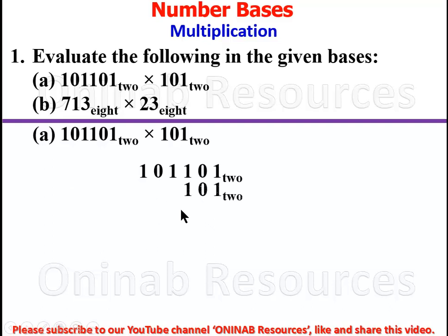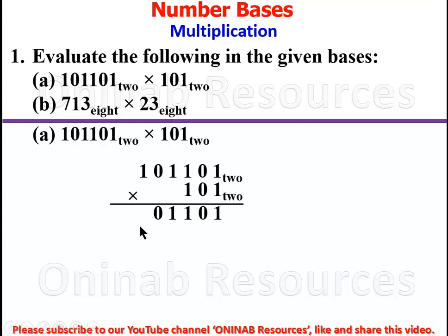We are going for expanded multiplication. Starting with the first digit of the multiplier: 1 times 1 is 1, 1 times 0 is 0, 1 times 1 is 1, 1 times 1 is 1, 1 times 0 is 0, and 1 times 1 gives 1. Since this is our multiplier, we start arranging the answers from under the multiplier.